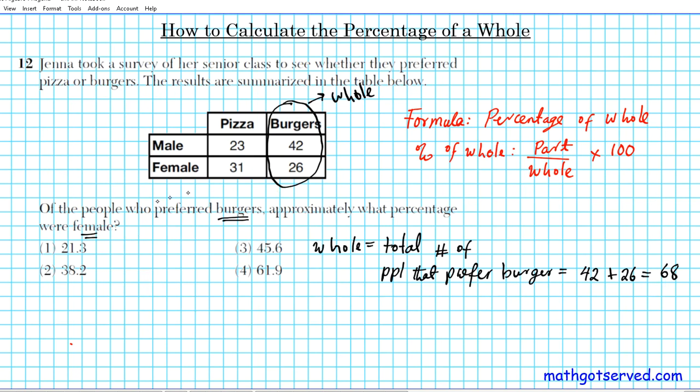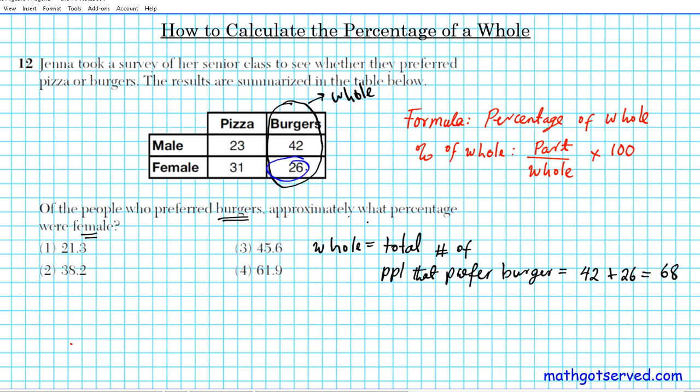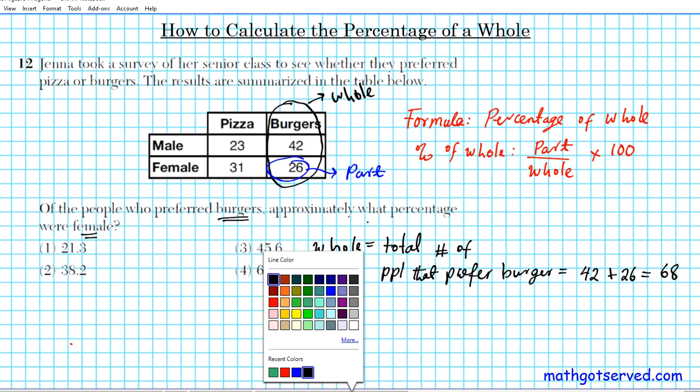Now, what's the part? We're looking for the percentage that were females. So this piece right here, the female numerical figure represents the part. So 26 out of the whole represents a fraction of females that prefer burgers.